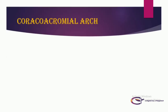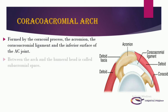Another important anatomical structure to discuss is the coracoacromial arch. It is an arch formed by the coracoid process, the acromion, the coracoacromial ligament, and the inferior surface of the acromioclavicular joint. The space between the arch and the humeral head is called the subacromial space.